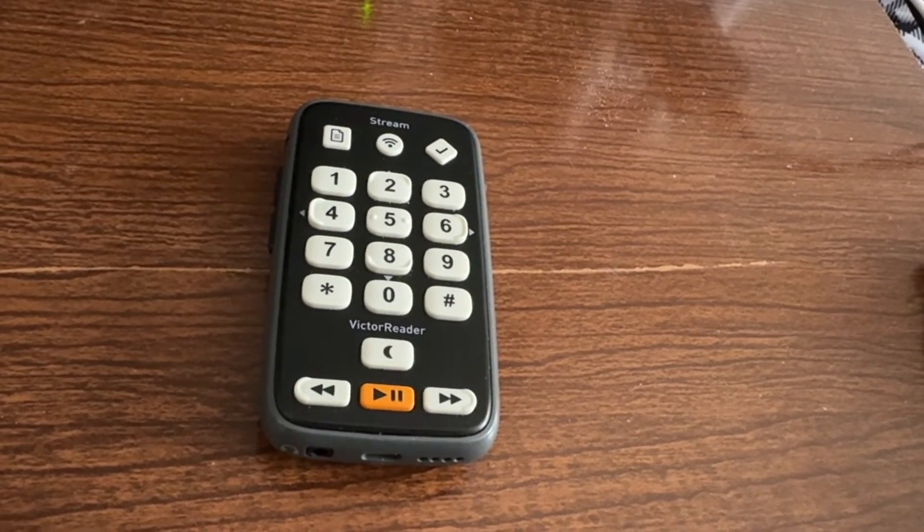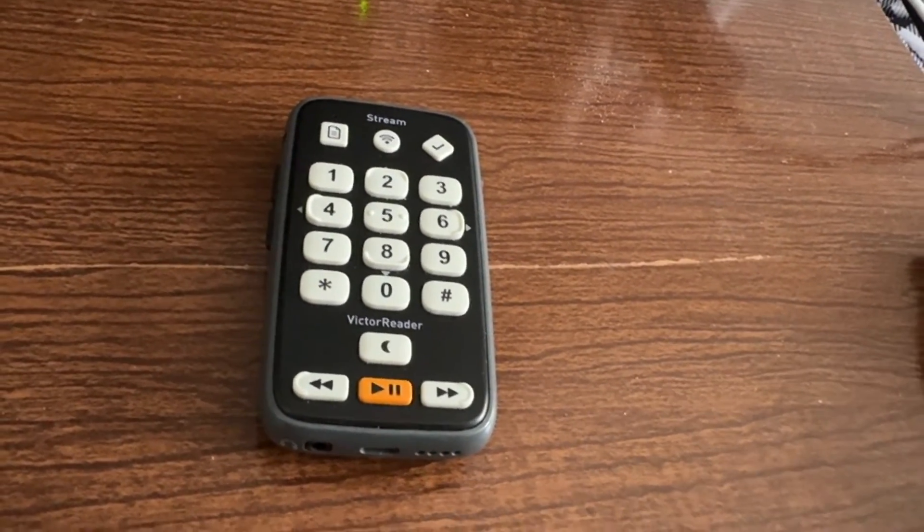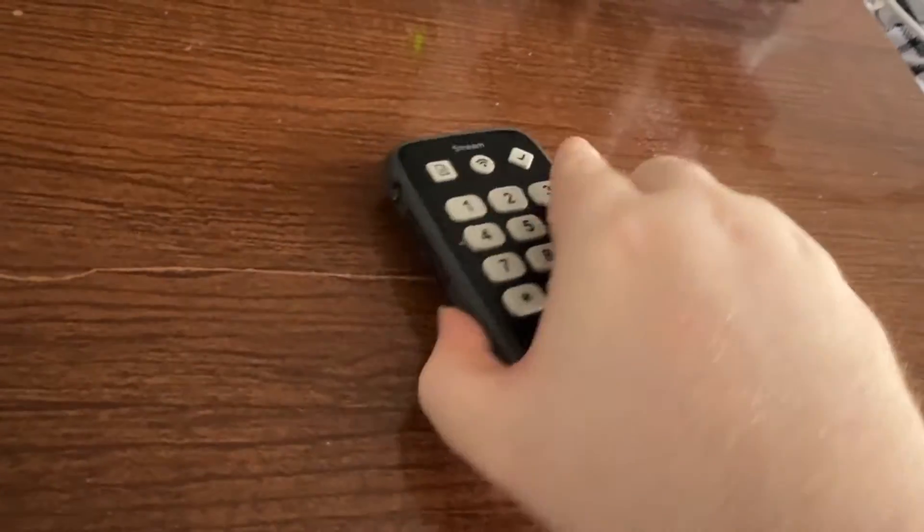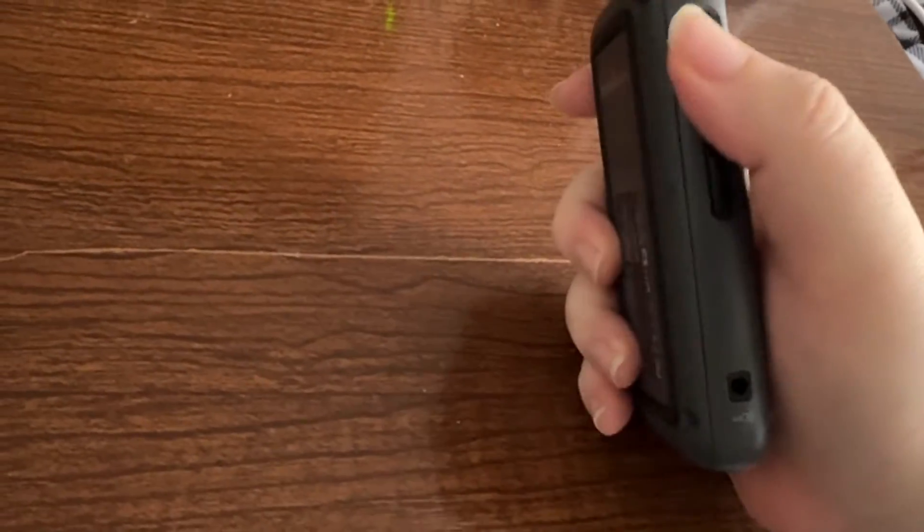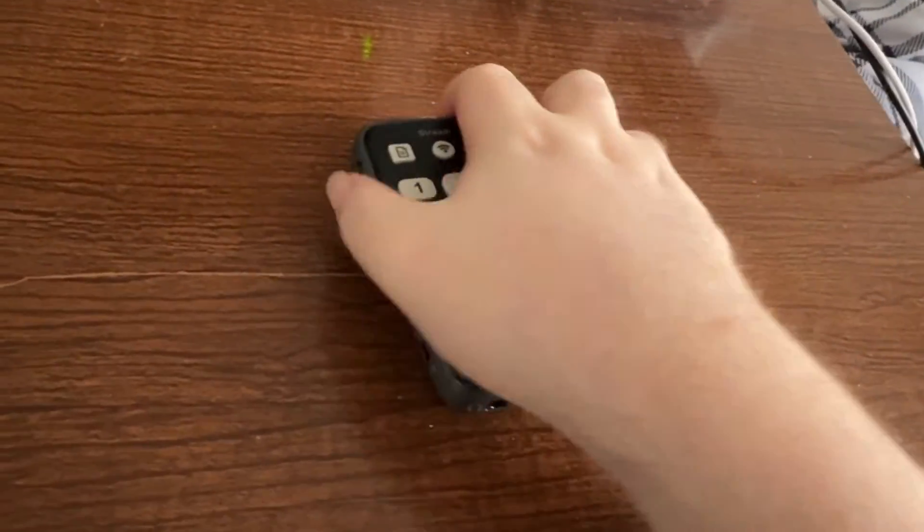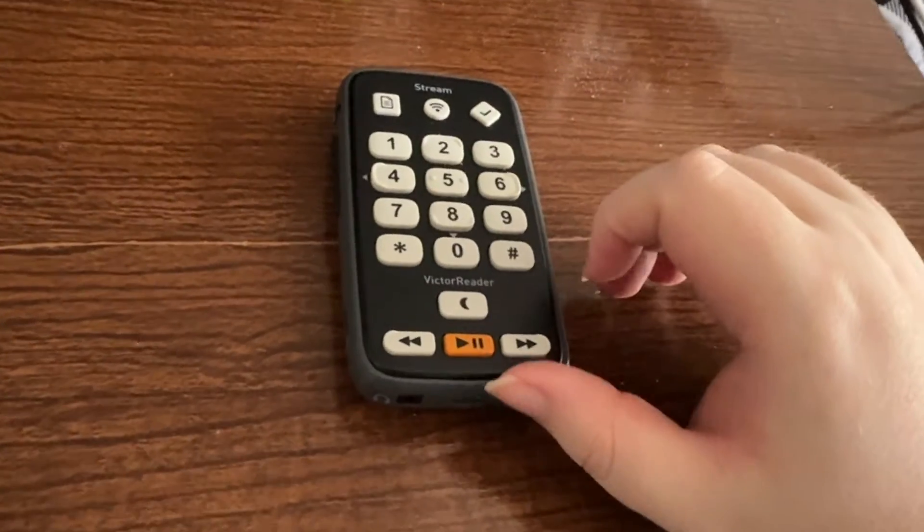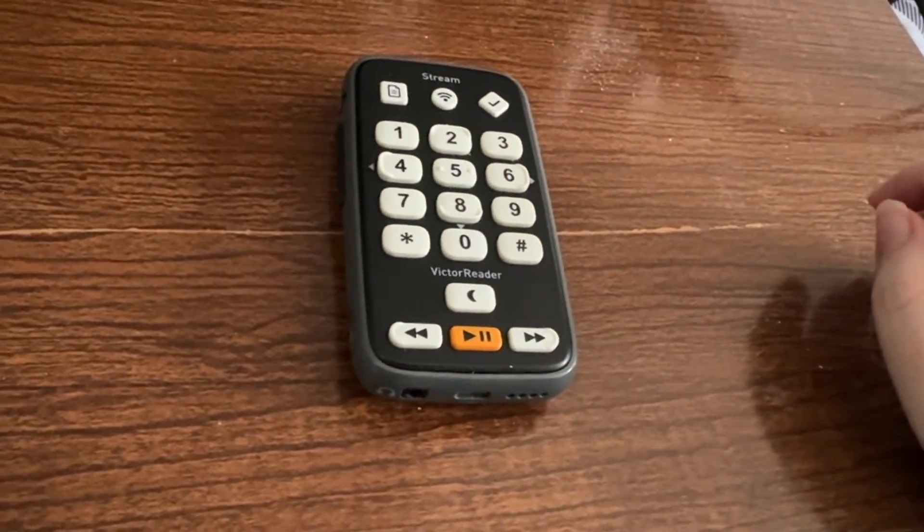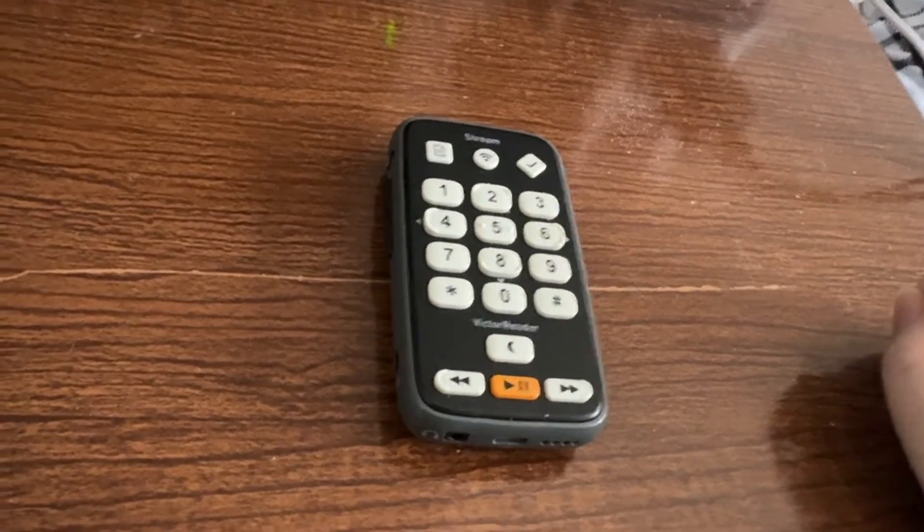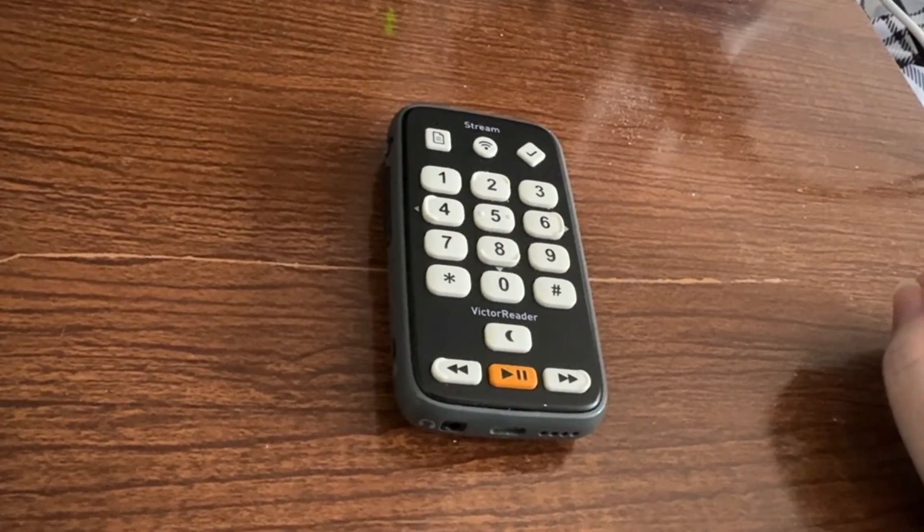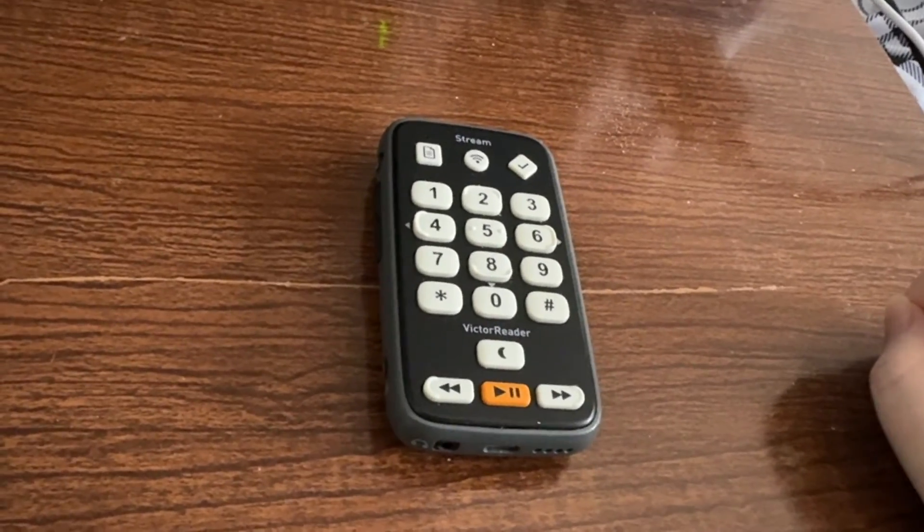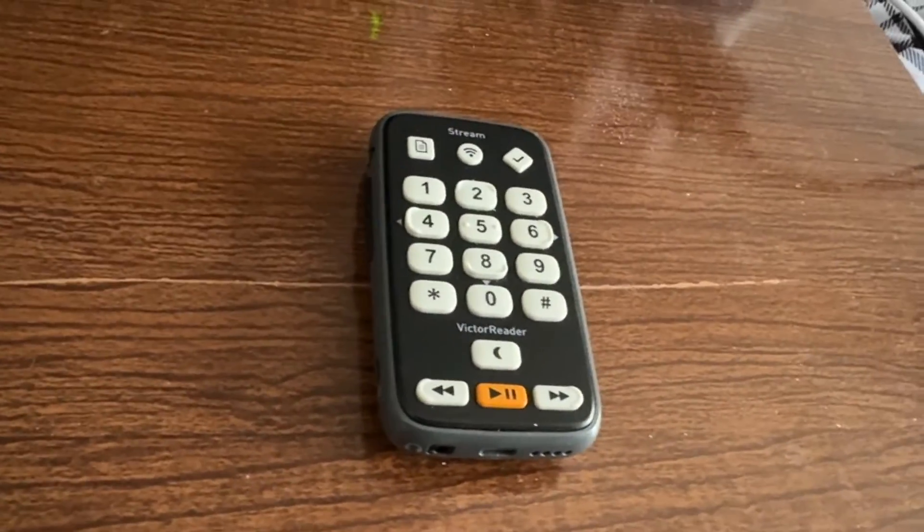Update completed. Shutting down. All right, it says update completed, and it did shut down. So let's go ahead and power back up. And now we should be running version 1.2. We'll check that though as soon as this boots up. So that was a very easy process and, of course, as usual, the stream talked us through it and explained kind of what was happening. So it did work.